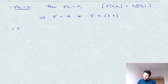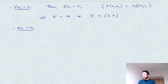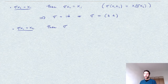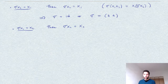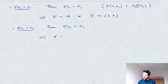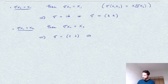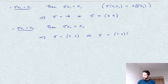Case two: sigma of X1 is X2. For the same reason, the expression X1·X2 must be preserved, and therefore X2 must be sent to X1. We are again left with two cases: either 3 and 4 are each left fixed — so sigma is the cycle (1 2) — or 3 and 4 are also exchanged, giving sigma as the product of cycles (1 2)(3 4).